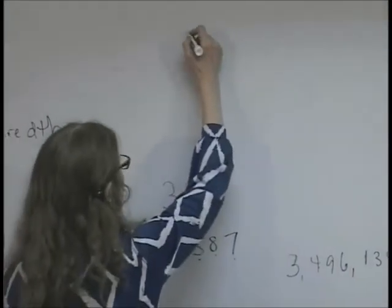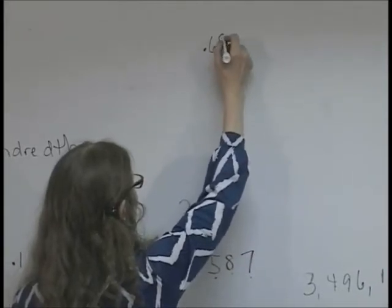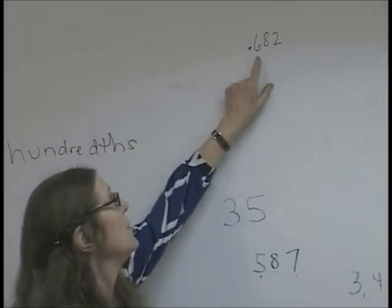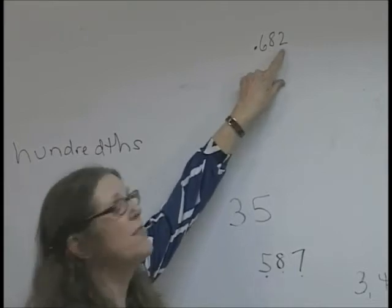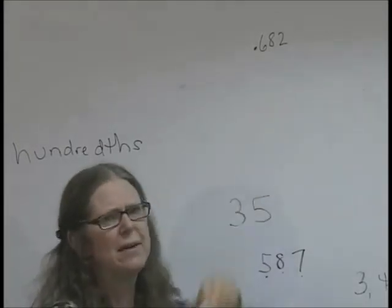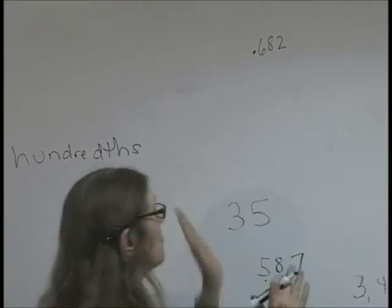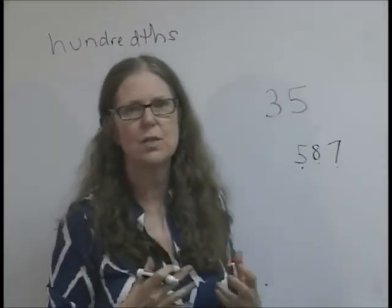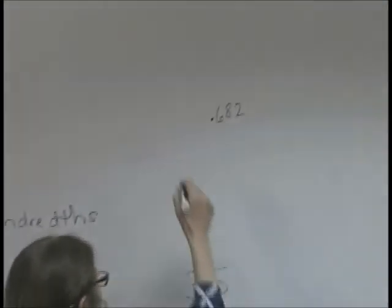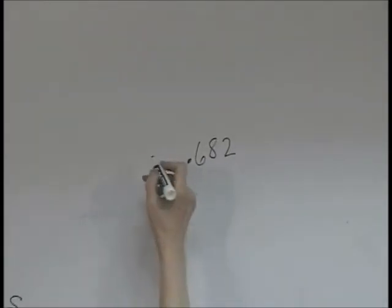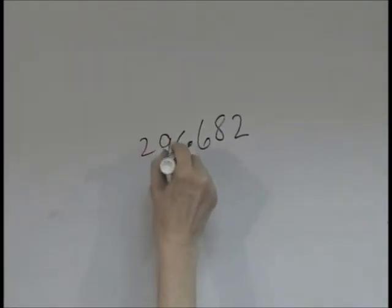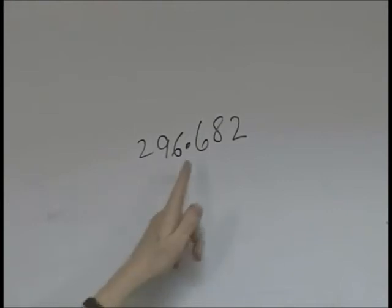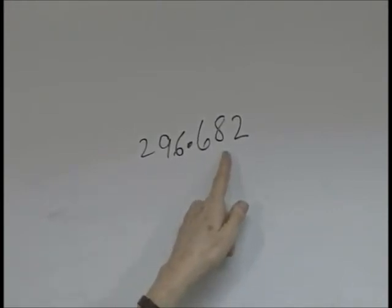What about .682? This is the tenths place. This is the hundredths place. This is the thousandths place. I want to point out something to you. When you go to numbers to the right side of the decimal point, there's no ones place. So if you have whole numbers on the left side, this is only the hundredths place. The third one over is the hundredths place, but the second one in the other direction is the hundreds place.